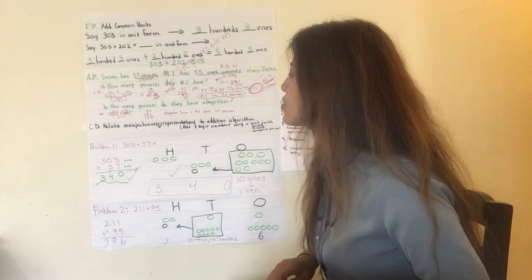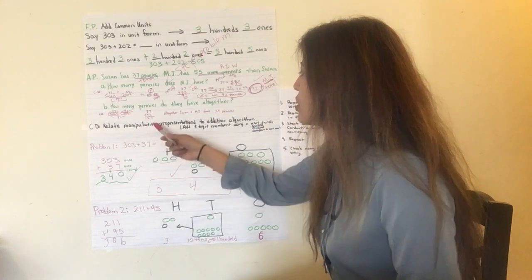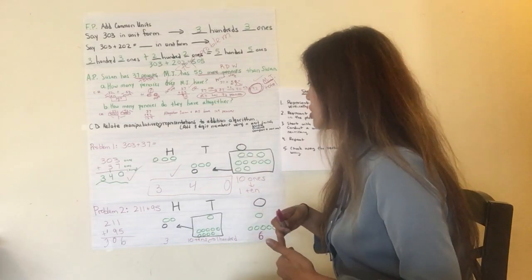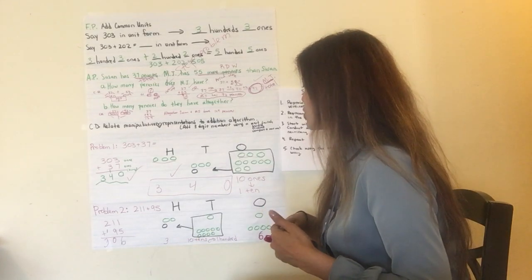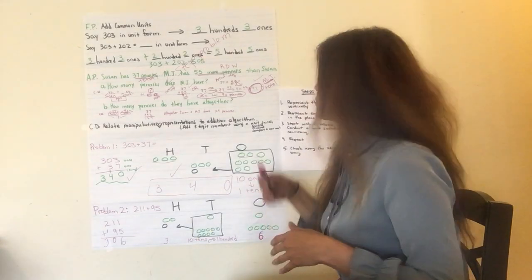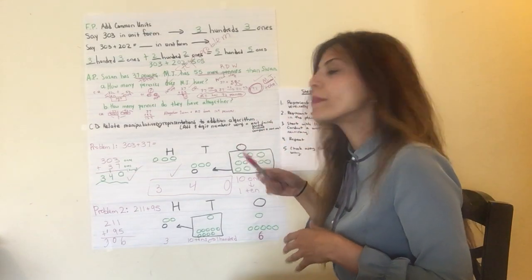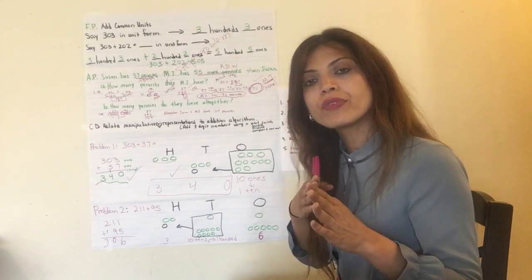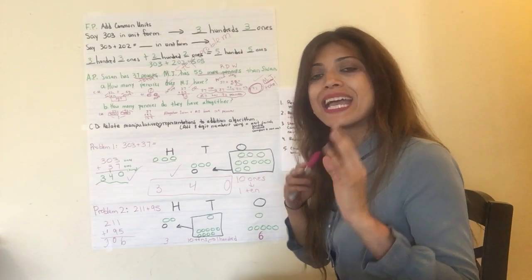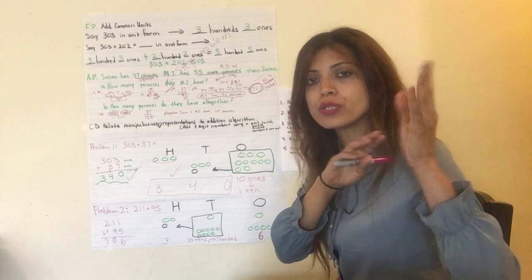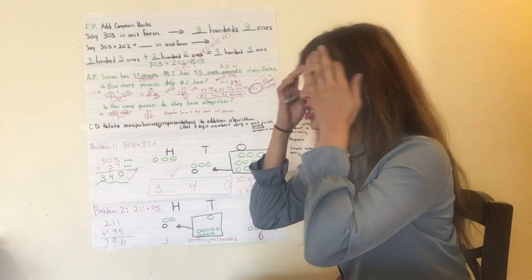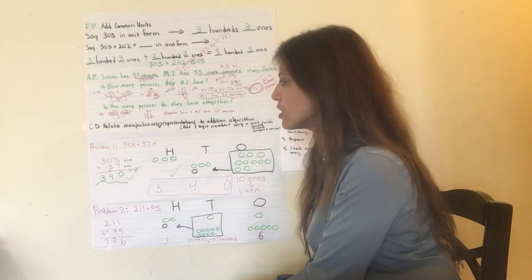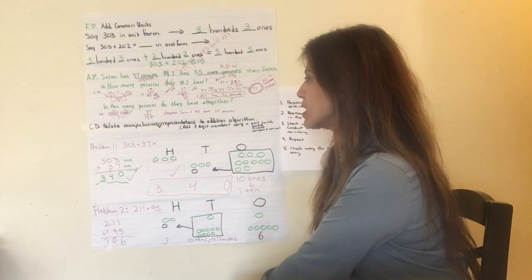We are going to move on to our conceptual development. Relate manipulative representations to additional algorithms. Basically, all we're doing today is adding three-digit numbers using a unit switch. What is a unit switch? When you bundle a number, when you rename a number, when you compose a new unit. You know this from the previous module, module 4. All you're doing right now is you're transferring those skills that you use with two-digit numbers to three-digit numbers. So, let's solve problem one, adding a three-digit number using a unit switch.